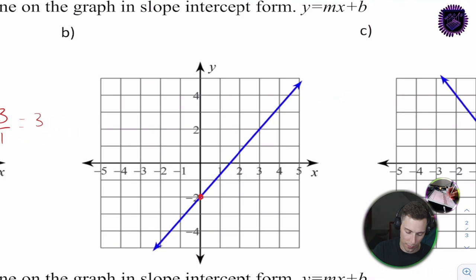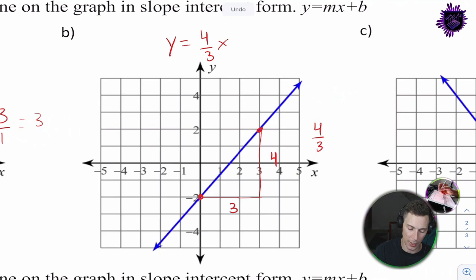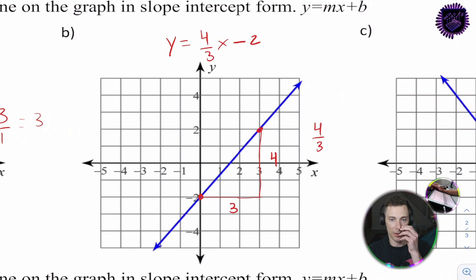For 6b: the y-intercept is negative 2. We go 3 over and 4 up — so the slope is 4 over 3, which can't be simplified. y = 4/3 x minus 2.